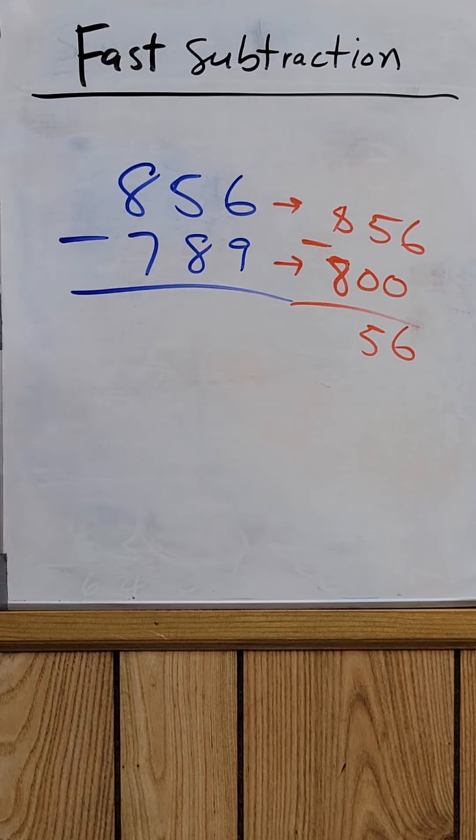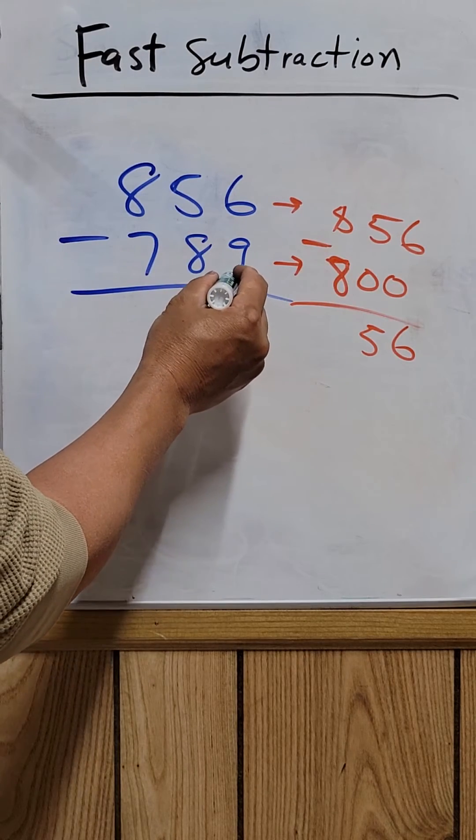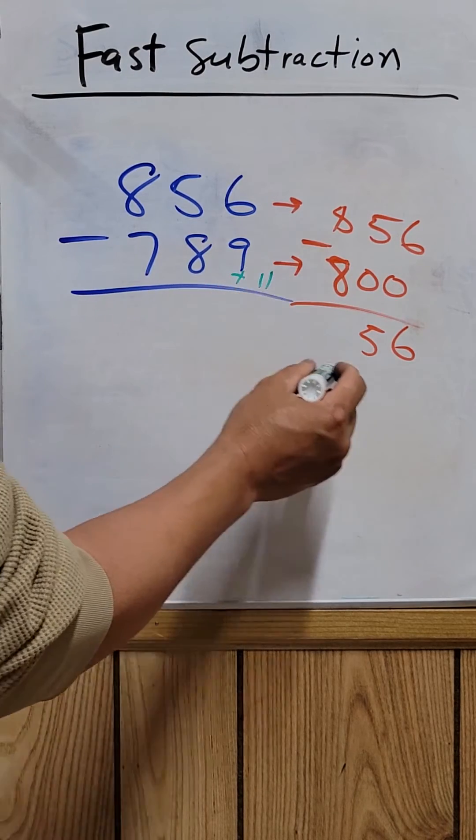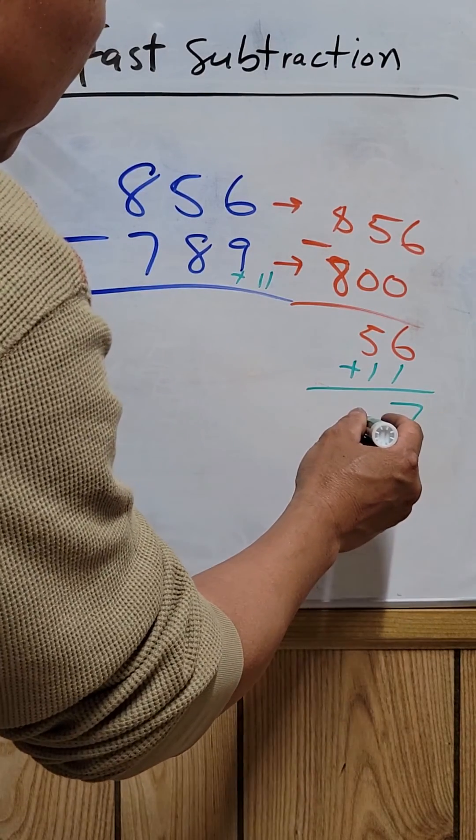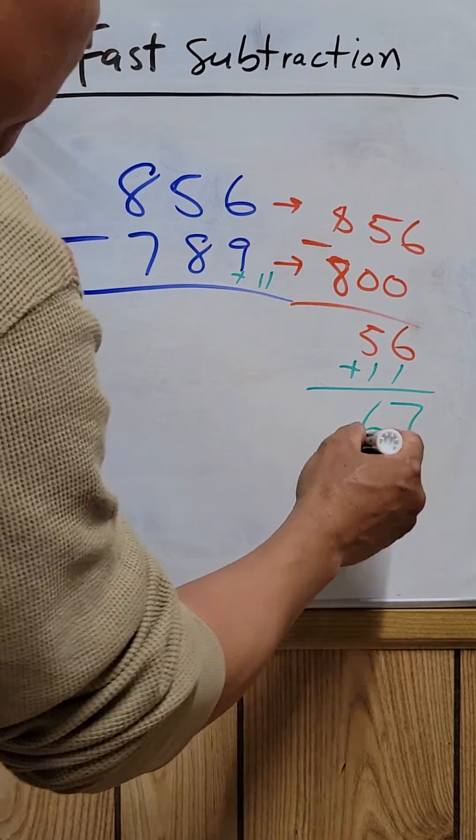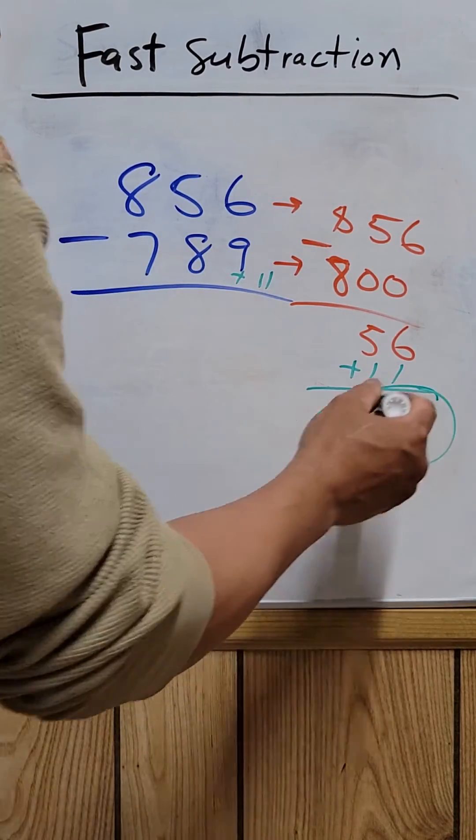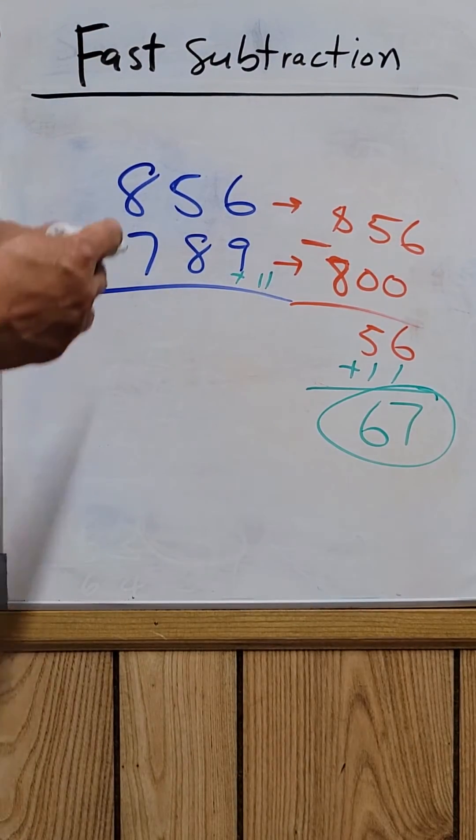So how do you get from 789 to 800? You have to plus 11. So plus 11 right here. So your answer is 67. That's your answer. So how easy it is to do this method right here.